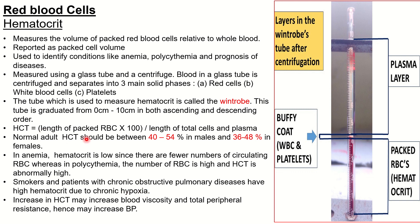The mathematical formula for hematocrit is: the length of packed red blood cells times 100, divided by the total length of cells and plasma. The normal ranges are 40 to 54% in males and 36 to 48% in females; values outside these ranges indicate the conditions discussed.